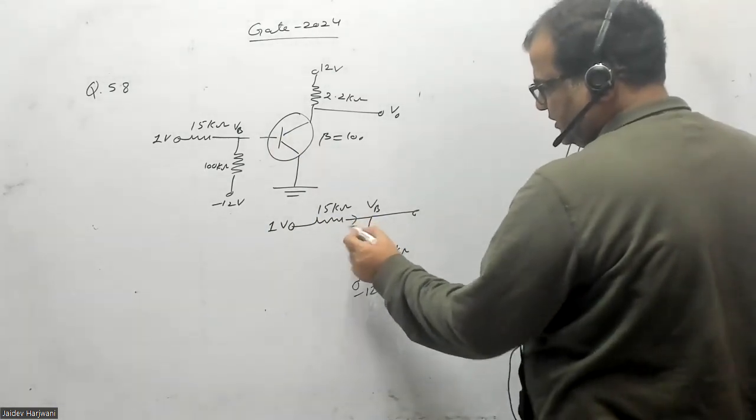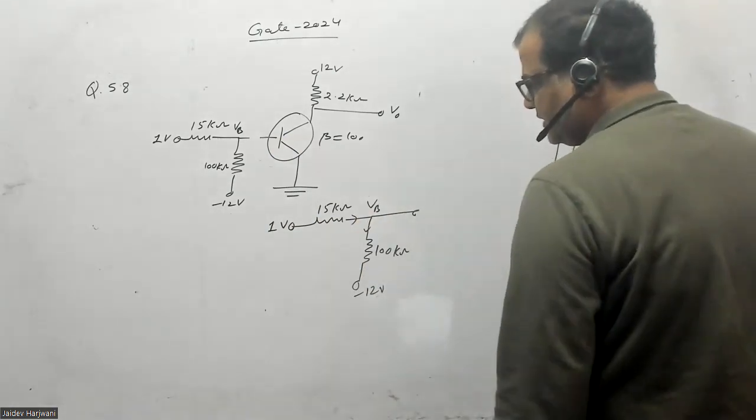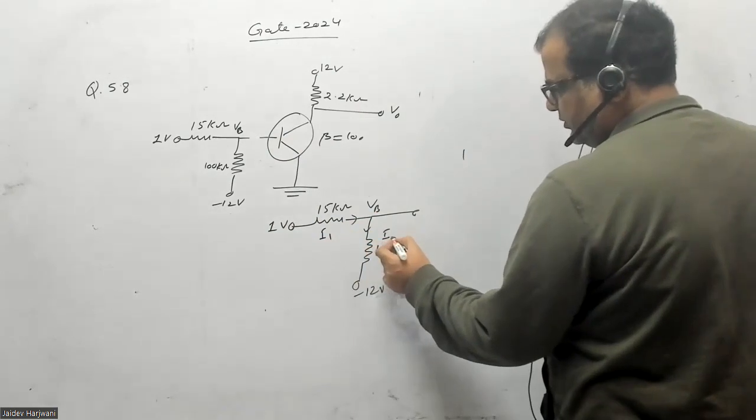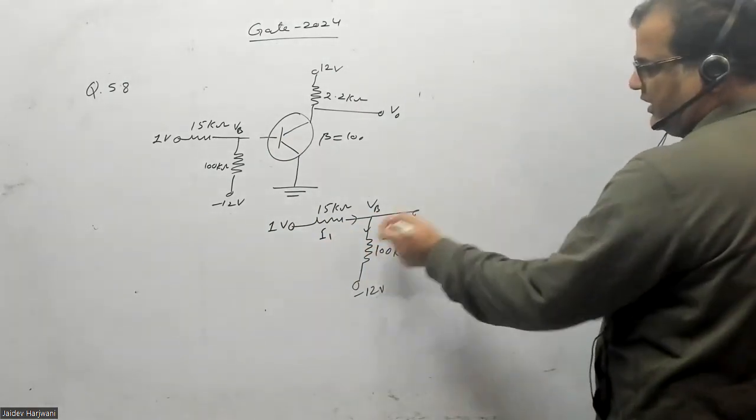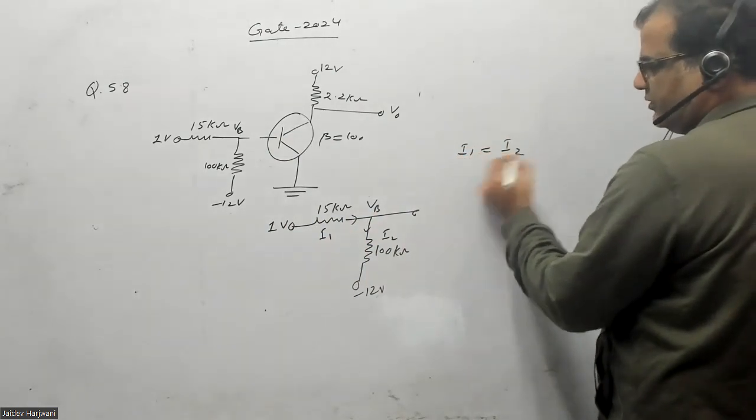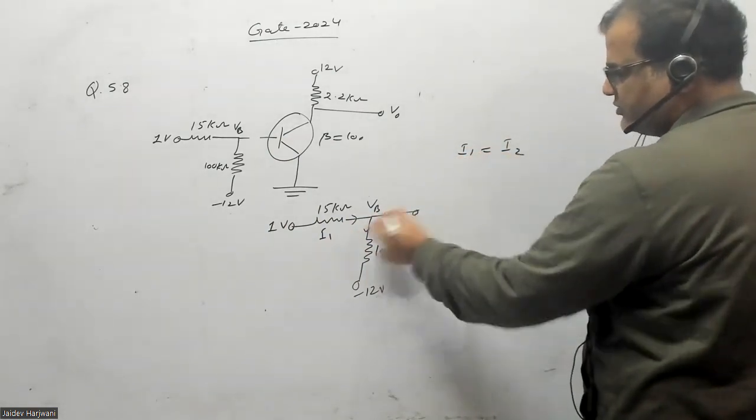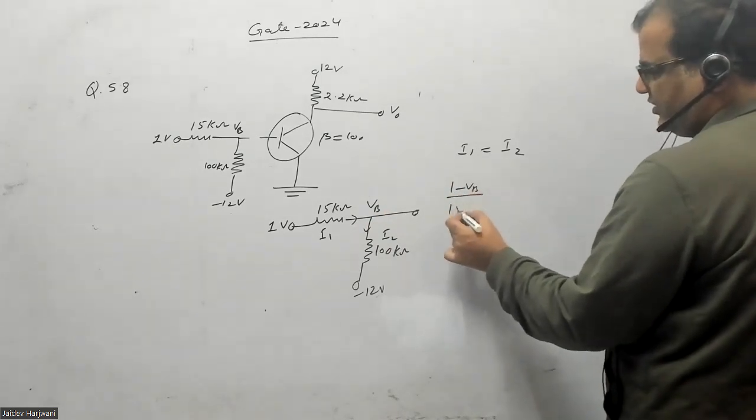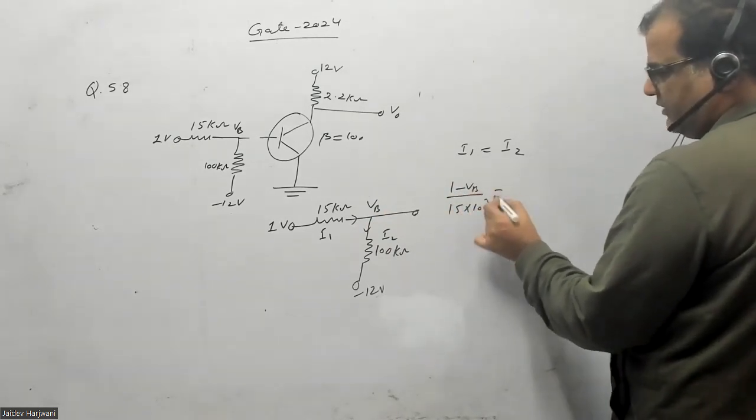Let us say this is my current. So 1 minus, say this current is I1, this current is I2. If you apply KCL, my I1 will be equal to I2 because no current is here, open circuit, so no current is going here.